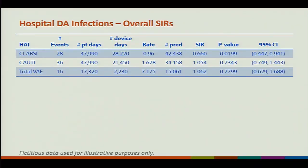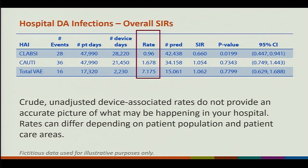Similar to our previous table, I'm looking at overall SIRs for my hospital for CLABSI, CAUTI, and total VAE. What's wrong with this picture? I've included a rate — a crude, unadjusted rate. For example, my rate of 0.96 would be 28 CLABSI events divided by 28,220 device days multiplied by 1,000. That would not be appropriate alongside the SIRs because, as we saw previously, rates for different units reflect different patient populations — this doesn't tell me the whole story of what's happening in my hospital. So we would take that out.